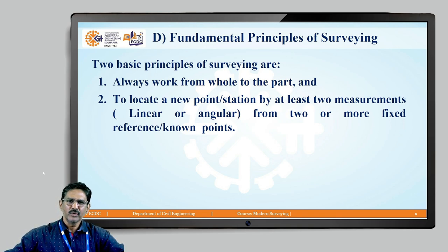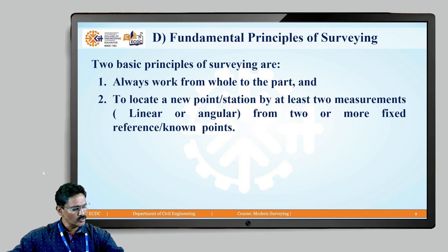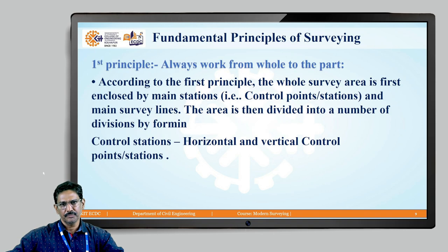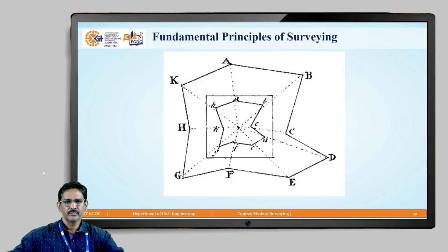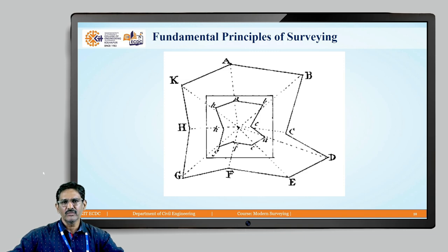The second principle says that you require at least two measurements — two reference points — to find out and fix a new point; otherwise it is not possible. The first principle establishes horizontal control points by working from whole to part. This sketch illustrates working from whole to part: capital letters indicate where we start the survey, and small letters indicate where we move inside, coming to the center of the work.